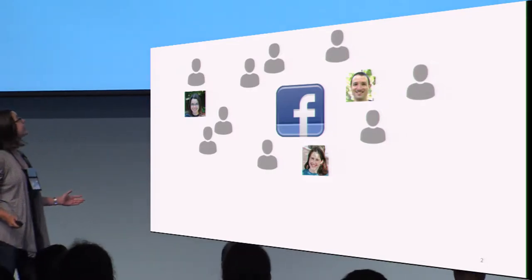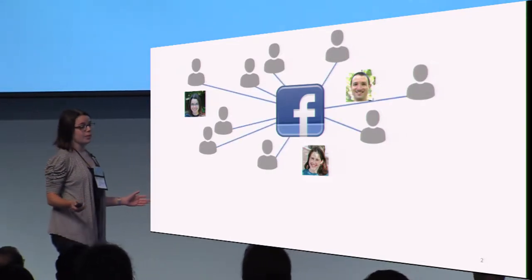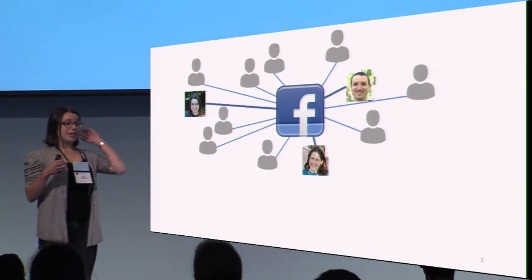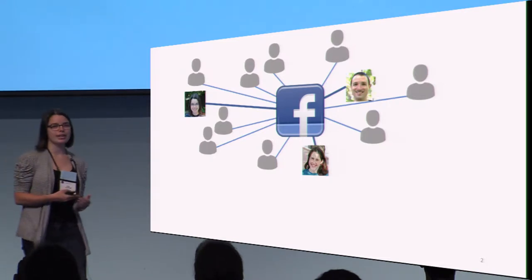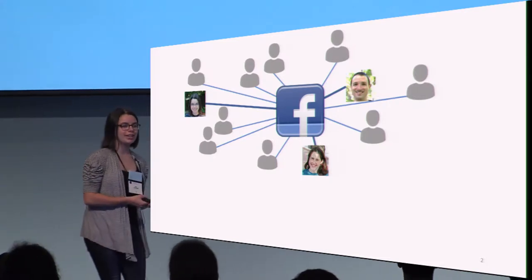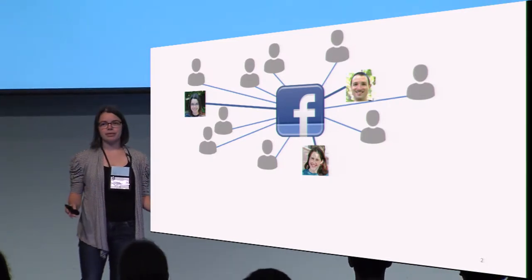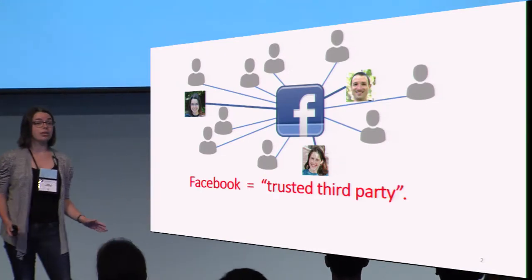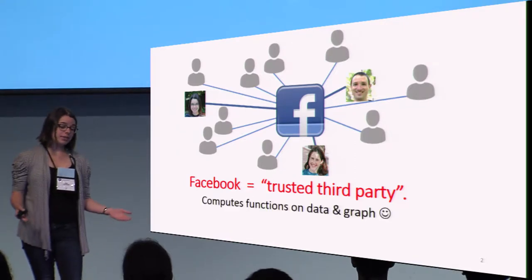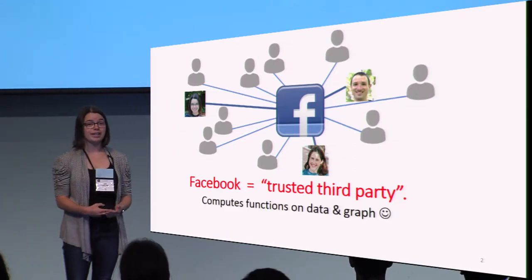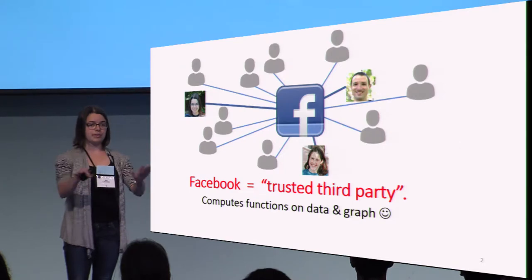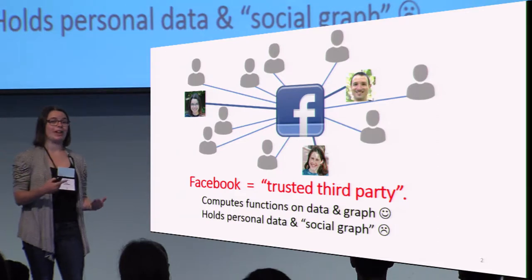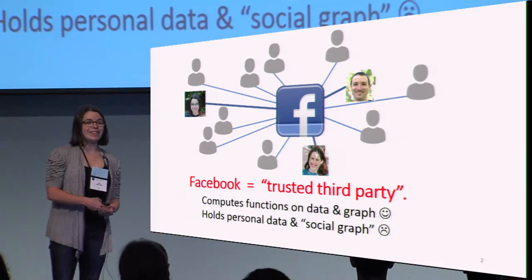Facebook is great. It connects millions of people all over the world with their friends and families and co-authors. It allows you to exchange messages, tell them how you're doing, what you're doing, your likes, your dislikes, as long as all of that information goes through Facebook. In this model, Facebook is a trusted third party, and using Facebook, it can compute functions on your personal data and the social graph of friends that you have.